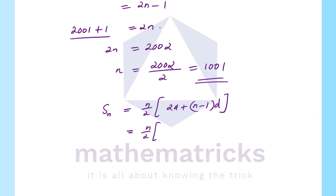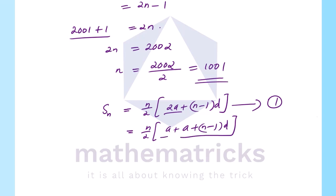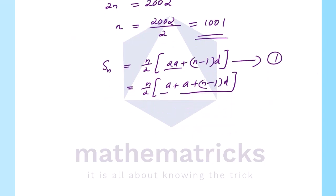Now we apply the sum formula. The sum S_n equals n by 2 into 2a plus n minus 1 into d, which is also equal to n by 2 into a plus a_n, that is, first term plus last term. Here n equals 1001.